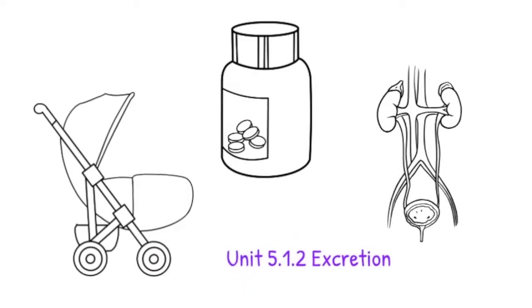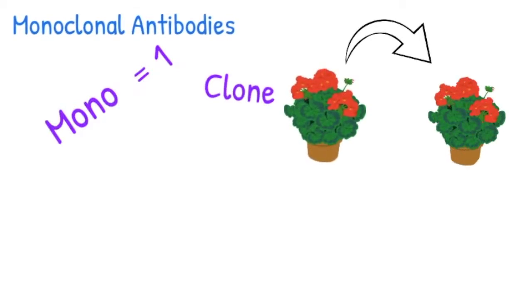This is part of the excretion unit of the OCR A-level biology course A. Modern pregnancy tests rely on monoclonal antibodies. These are an effective and accurate way to get a result. Mono means one and clone means identical copy.